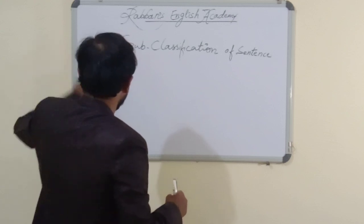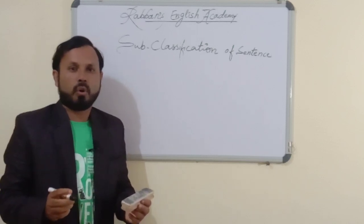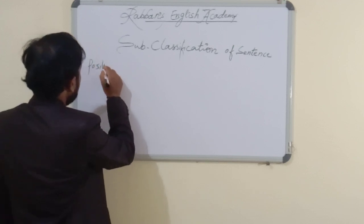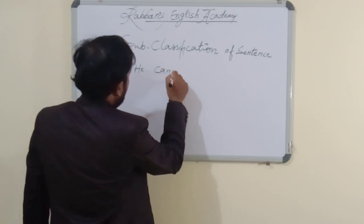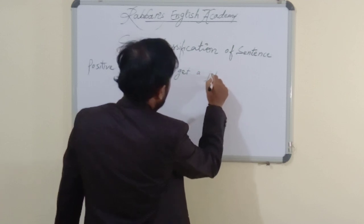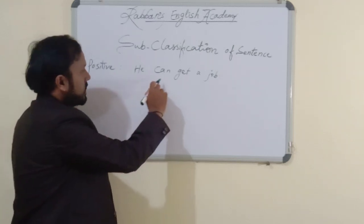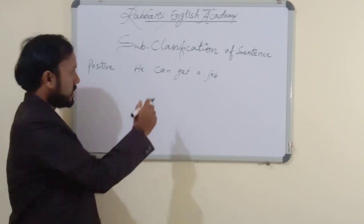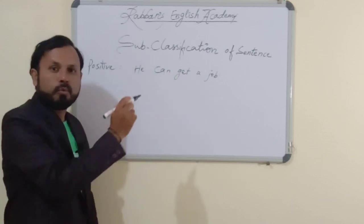For example, what are the four types that we are using in Hindi or in English also? Positive sentence — for example, 'He can get a job.' This is positive. Why is it positive? Because there is no negative word. Negative means: no, not, never, rare, seldom. There are no such words used here. That's why it is positive sentence. 'He can get a job.' — 'Woh job paa sakta hai.'